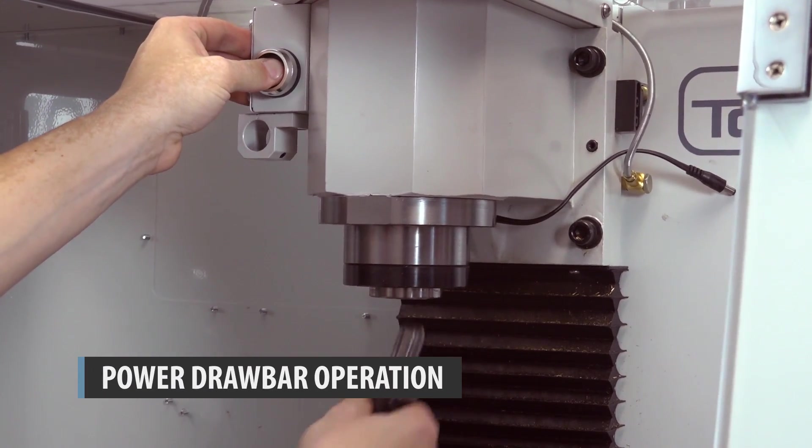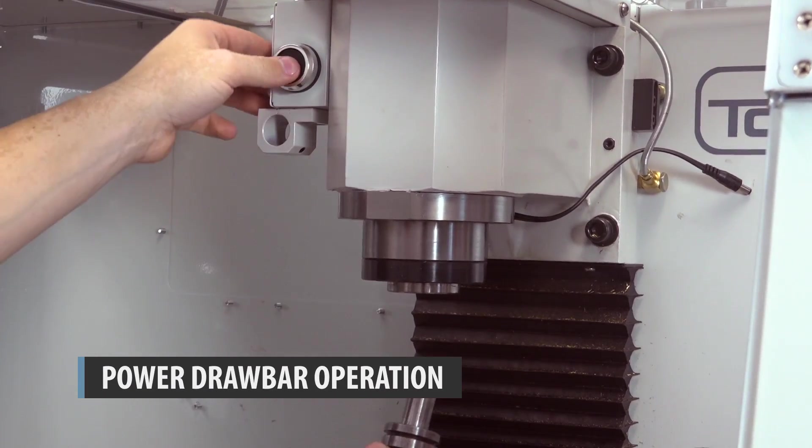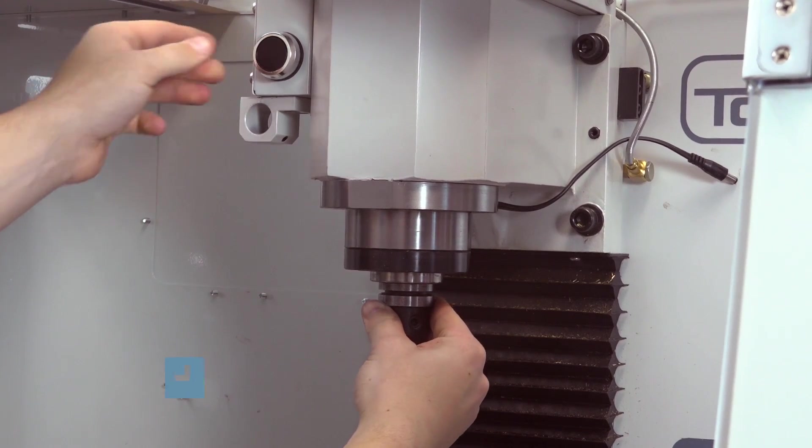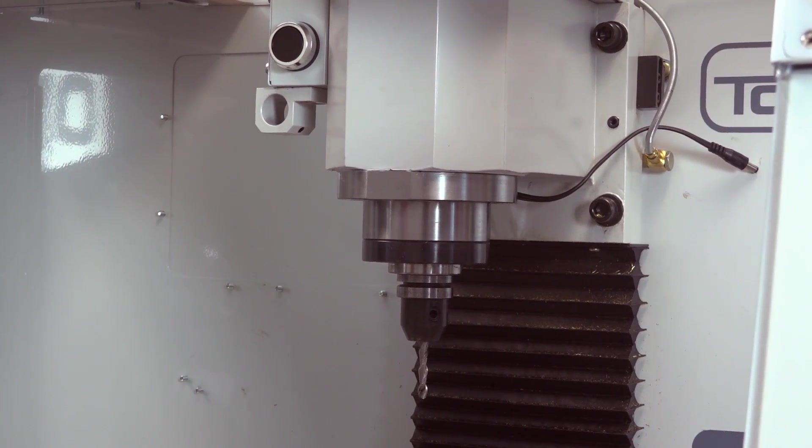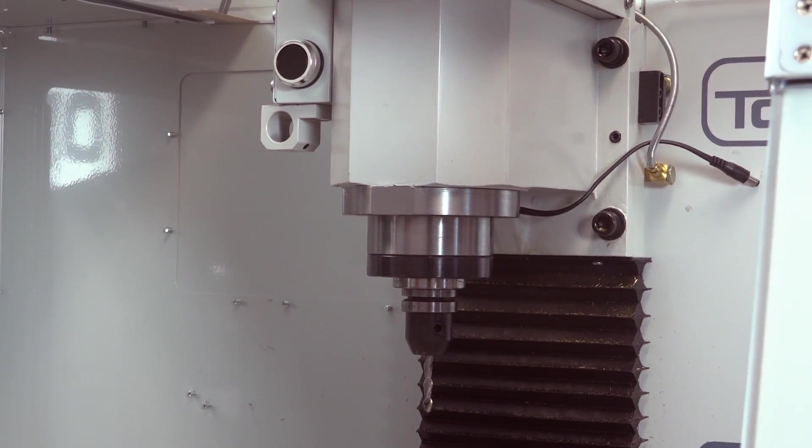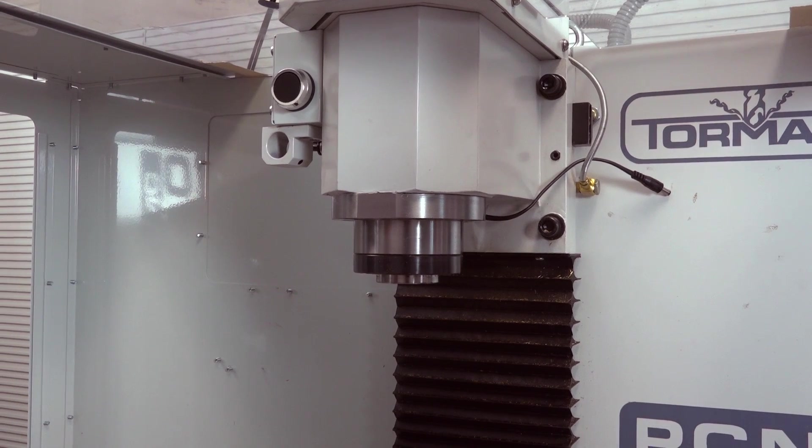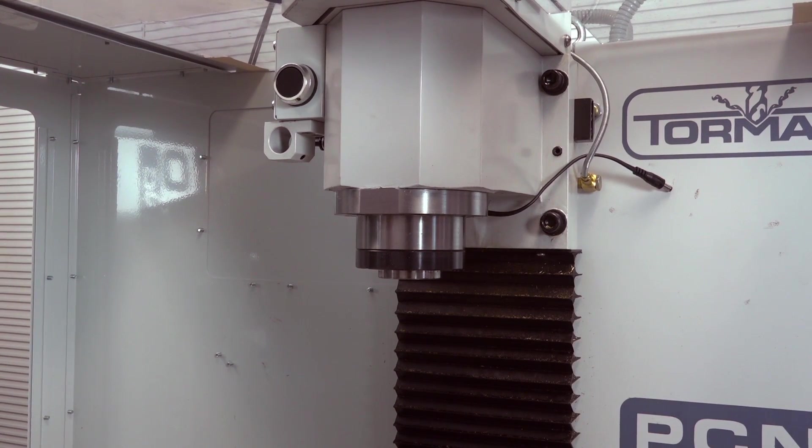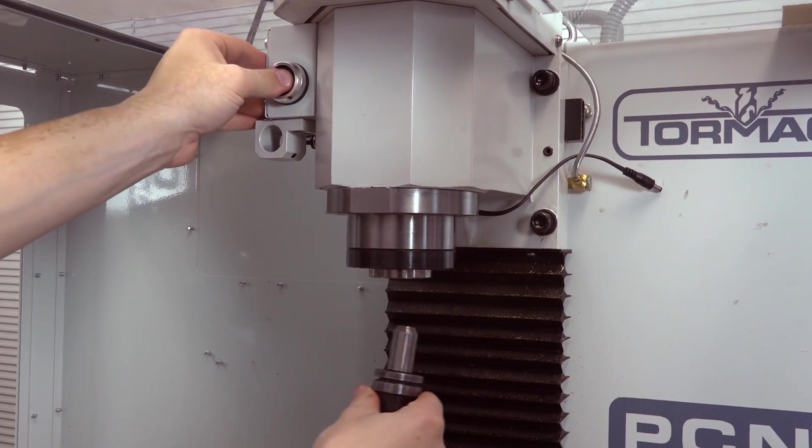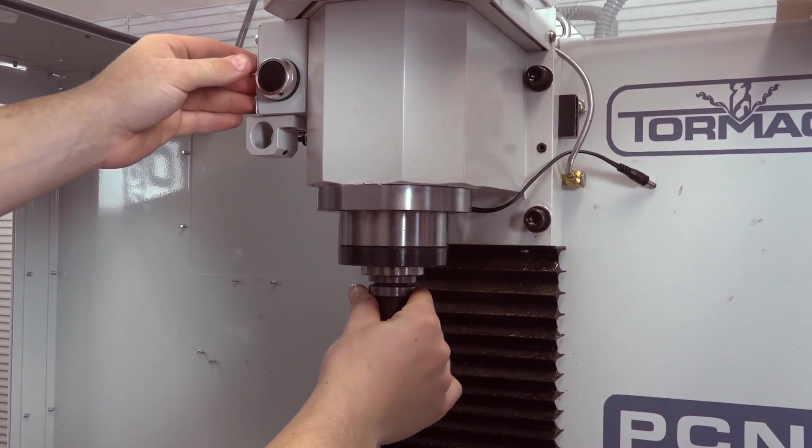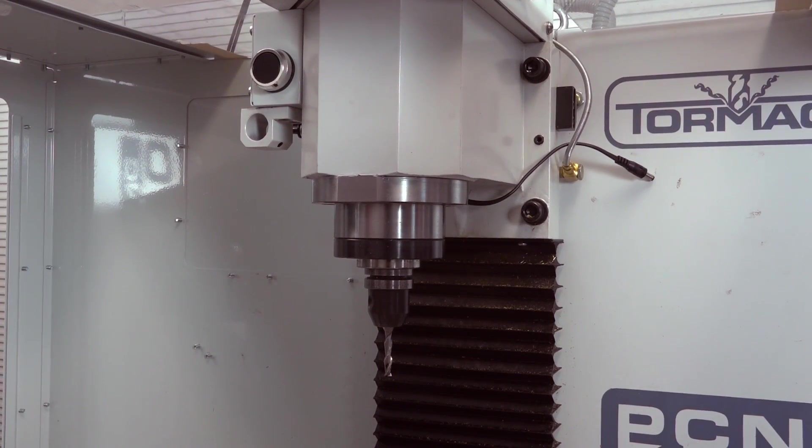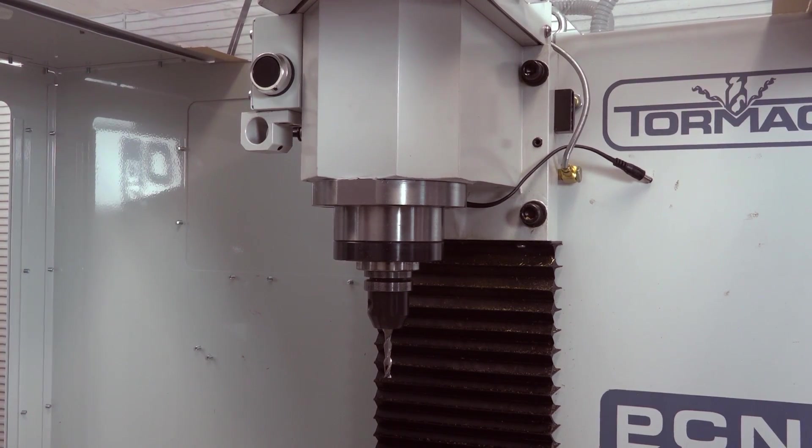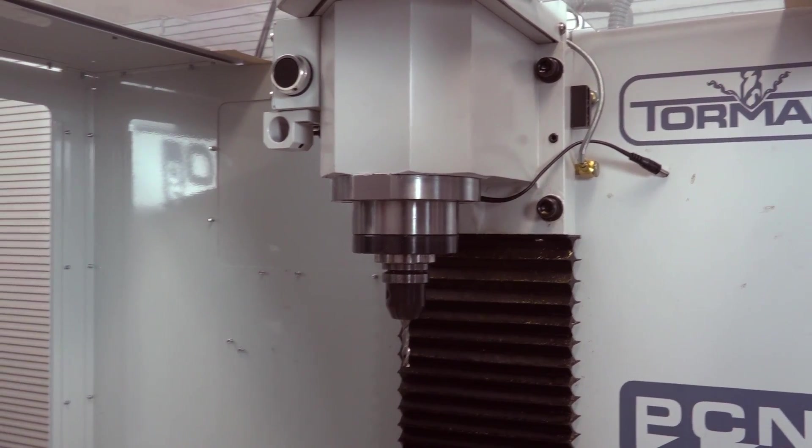Press and hold the power drawbar button to release the tool holder in the spindle. Insert a new tool holder. The power drawbar automatically reverts to clamp mode when the button is released. The PCNC 440 power drawbar uses a manual push button with no means of locking the power drawbar in the unclamped position. Because of this, it is best to leave a tool holder clamped in the collet. This will prevent fatigue in the collet and extend the service life of the power drawbar.